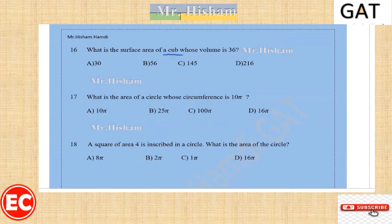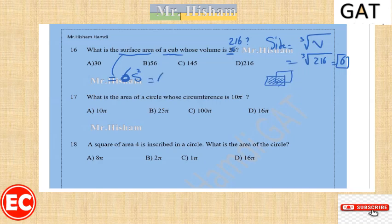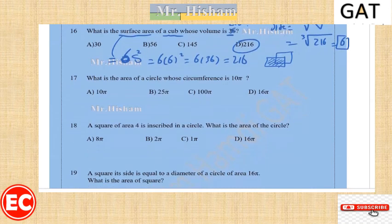Question sixteen: what is the surface area of a cube whose volume is 216? The side is the cubic root of 216, which equals 6. The surface area of a cube is 6 times side squared, so 6 times 36 equals 216. The difference between volume and surface area lies in the units: area uses square units and volume uses cubic units.